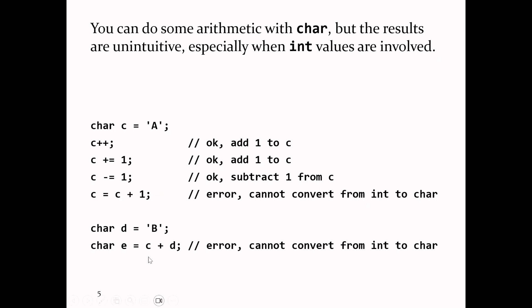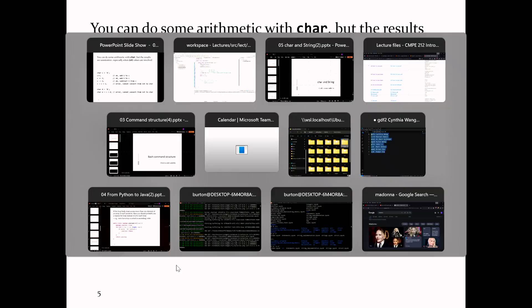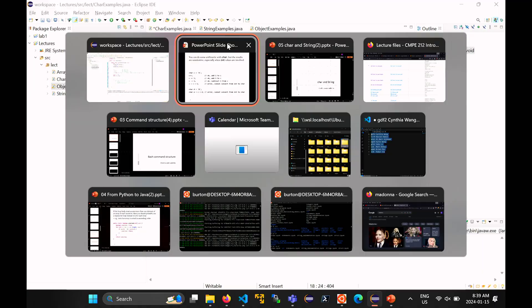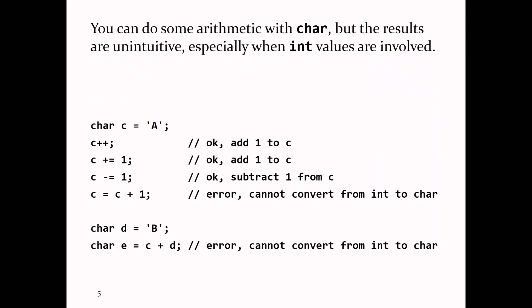It gets more confusing: if you make a char d, and c is also a char, and you try to add them together, you might expect that to work. But Eclipse complains again: 'type mismatch: cannot convert from int to char'. The reason is that any arithmetic done with an integer type smaller than int is automatically converted to int. In Java, the smallest type you can do arithmetic with for integer types is always int — so char plus char becomes int plus int, giving an int, which you can't store back in a char.